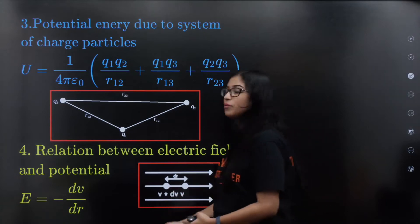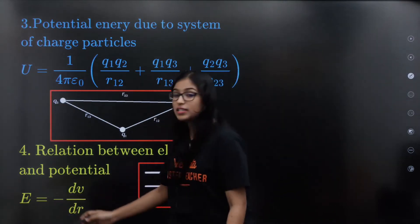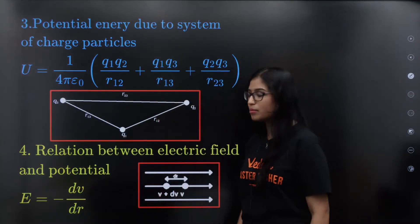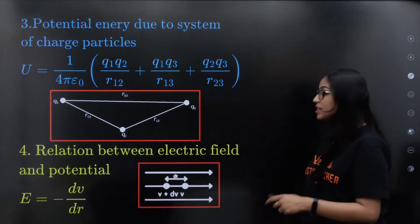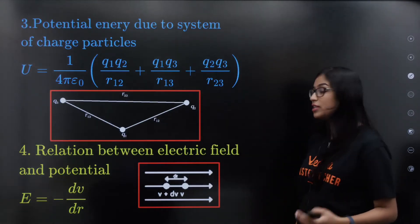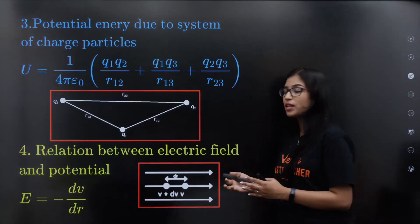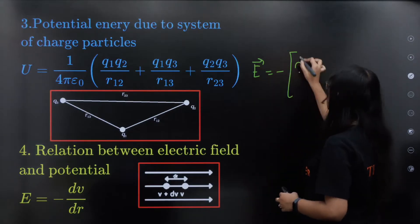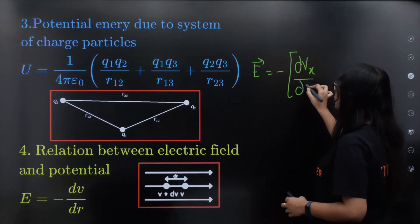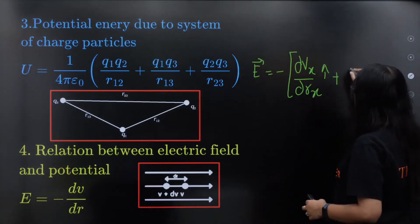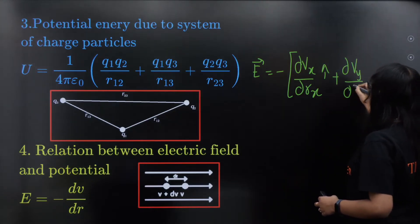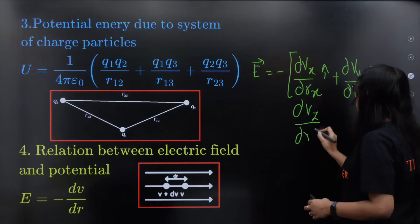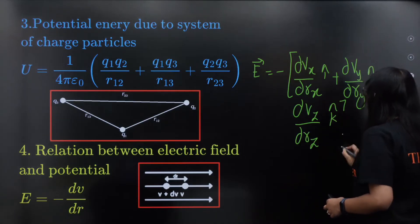We already revised the previous unit. Electric field is always opposite to the electric potential. E = −dV/dr. In vector form: E = −(∂Vx/∂rx)î − (∂Vy/∂ry)ĵ − (∂Vz/∂rz)k̂.